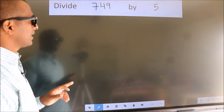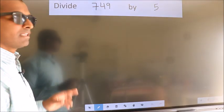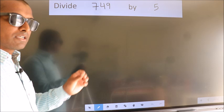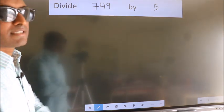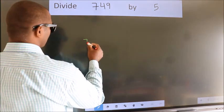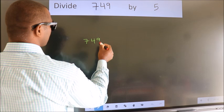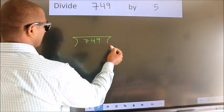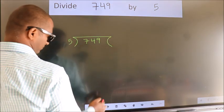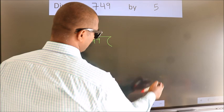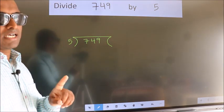Divide 749 by 5. To do this division, we should frame it in this way: 749 here, 5 here. This is your step 1.